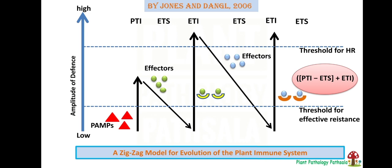Like PTI, that is pathogen-triggered immunity, ETI, effector-triggered immunity, ETS, PAMP, effector, R gene, etc. So we will discuss that first.